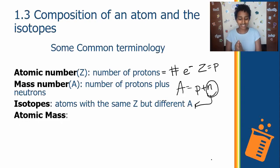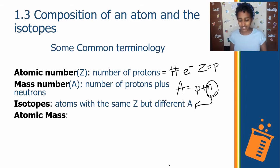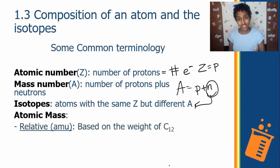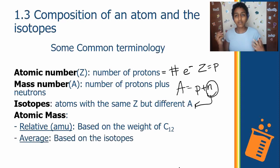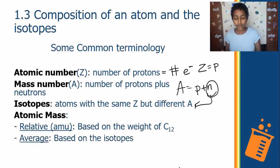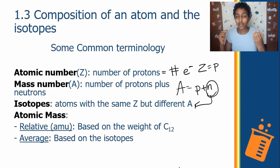Next, we have atomic mass. There are two types: the relative atomic mass and the average atomic mass. The most common one we use is the relative atomic mass, which is based on the weight of C-12 — carbon-12.